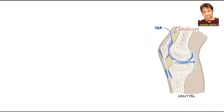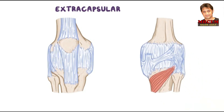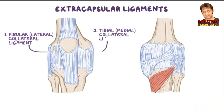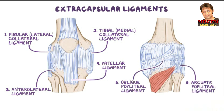The joint capsule is strengthened by six extracapsular, external, or intrinsic ligaments. These include the fibular or lateral collateral ligament, tibial or medial collateral ligament, anterolateral ligament, patellar ligament, oblique popliteal ligament, and arcuate popliteal ligament.